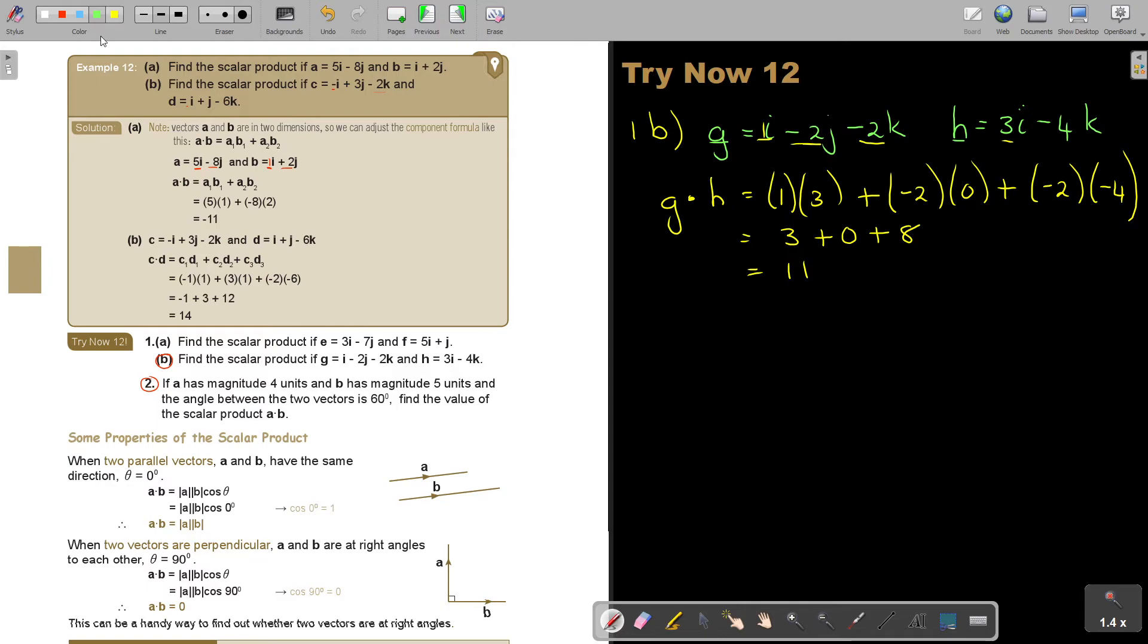And then, if I look at number 2, if A has a magnitude of 4, so, I'm going to say A, the magnitude of A is 4. B has a magnitude of 5 units. And the angle between the vectors is 60. So, angle 60 degrees. So, if I want to find the scalar product. So, find the scalar product of A dot B. So, it's going to be the magnitude of A.